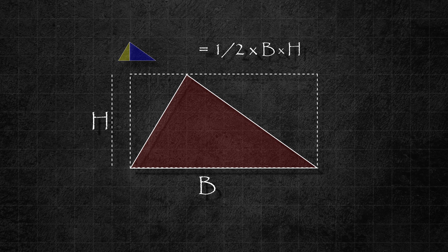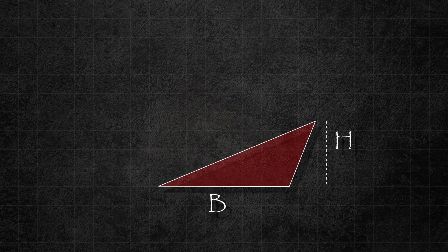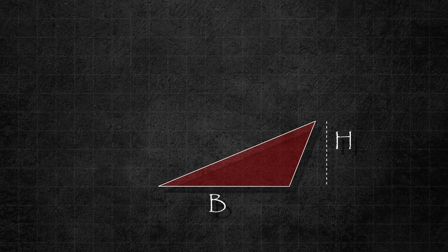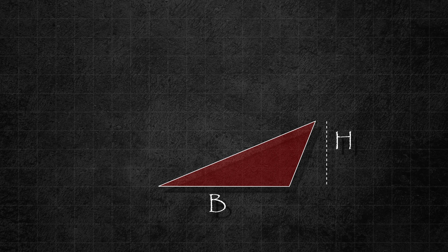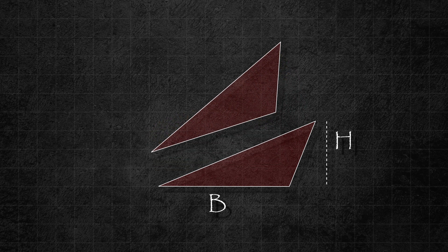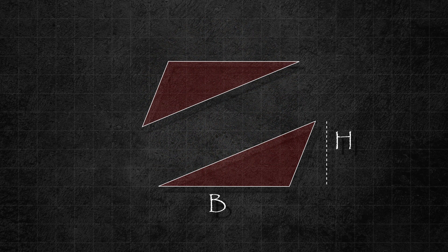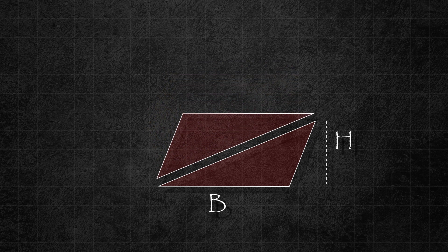The third type of triangle we need to consider is the obtuse triangle, which has one interior angle greater than 90 degrees. To simplify the area calculation, we can make an identical copy of this triangle and rotate it 180 degrees. When we attach it to the original triangle like this, we get a parallelogram.